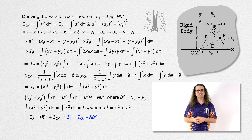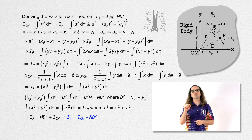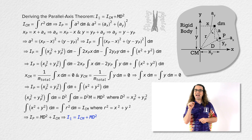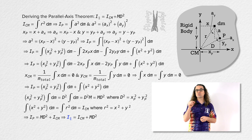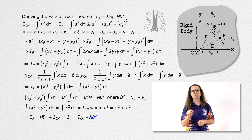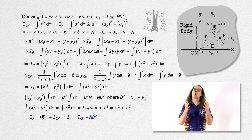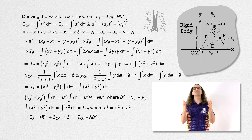Again, the parallel axis theorem is a convenient way to determine the moment of inertia or rotational inertia of a rigid body about an axis which is parallel to an axis which runs through the center of mass of the object. The parallel axis theorem states that the rotational inertia about any axis parallel to and a distance capital D away from the axis through the center of mass equals the rotational inertia about the center of mass plus capital M times capital D squared, where capital D is the linear distance between the two parallel axes. Hopefully that makes a lot more sense now. Thank you very much for learning with me today.